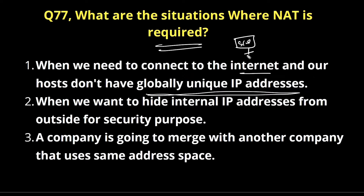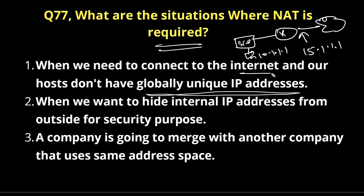Suppose this is my network; here is one user with IP address 10.1.1.1. This is my router and this is my ISP. Here I am running IP address 15.1.1.1 — this is my public IP address and 10.1.1.1 is my private IP address. In this situation, my machine is using a private IP address. There will be millions of machines using the same private IP address, so ISP will never identify this machine by its private IP address. Here you need to configure NAT to make communication possible. NAT is used to address the shortage of IPv4 addresses. NAT allows multiple machines to use the same private IP address.